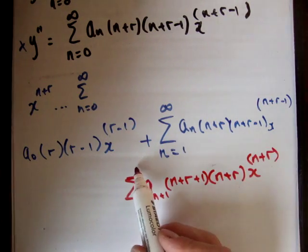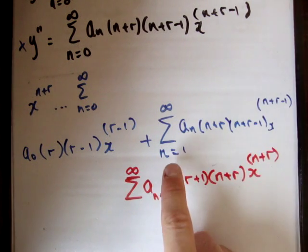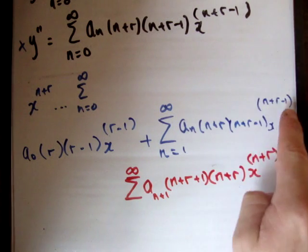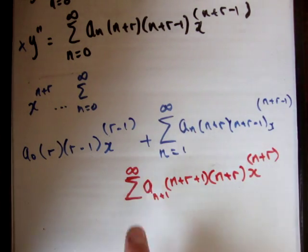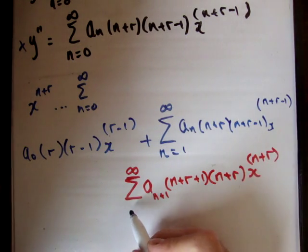Alright, and this still goes to infinity. And I said if we increase in the equation we decrease in where it starts, and if we decrease in the equation we increase where it starts. So what we've done is we've increased in the equation so we must decrease where we started and we now start at n is equal to 0.